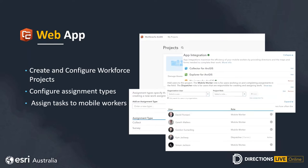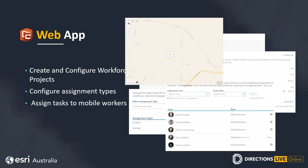Within Workforce for ArcGIS, when we set up a project we can add dispatchers — the people working back in the office — and then our mobile workers, including their contact details. We can use Workforce to contact our people through the application rather than going straight to phones, and this works in the field as well. We can also configure the maps and layers used by mobile workers, with dispatchers able to see all the same data at the same time.